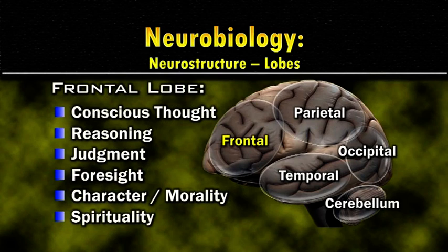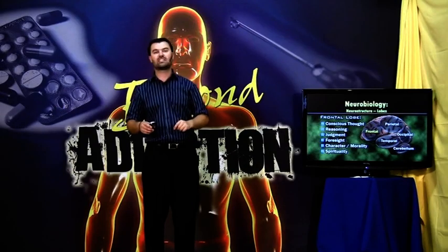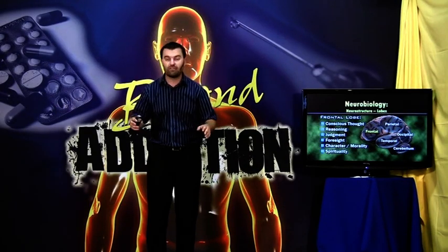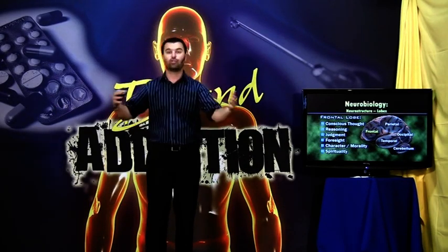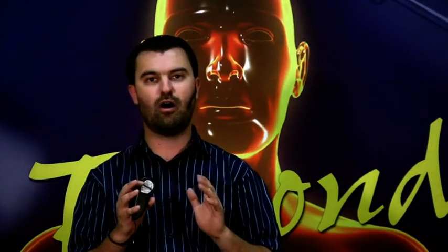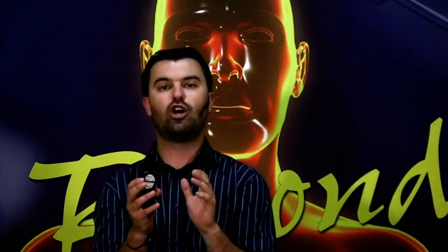The frontal lobe handles conscious thought, reasoning abilities, judgment, foresight, character and morality, and spirituality. You can understand how that combination makes you who you are. So the frontal lobe of your brain is the one you want to guard at all costs. The frontal lobe is what makes you you and me me.